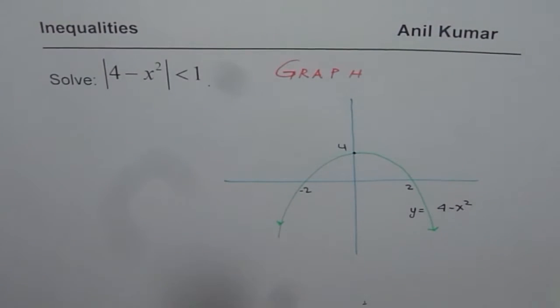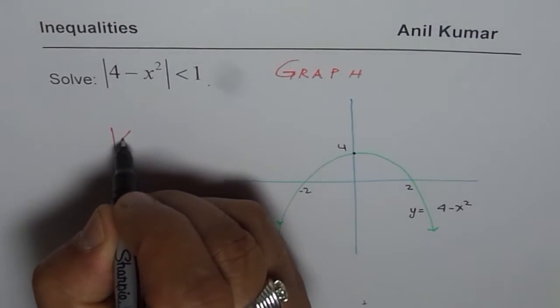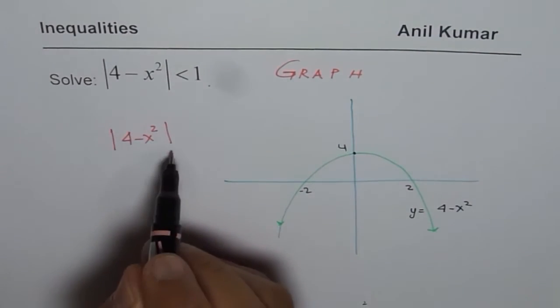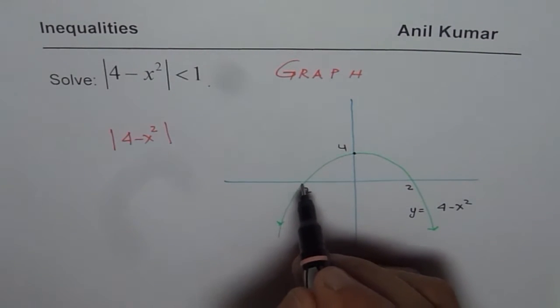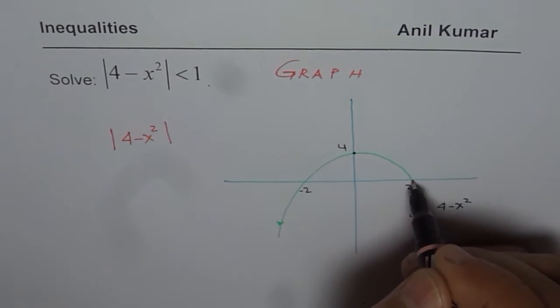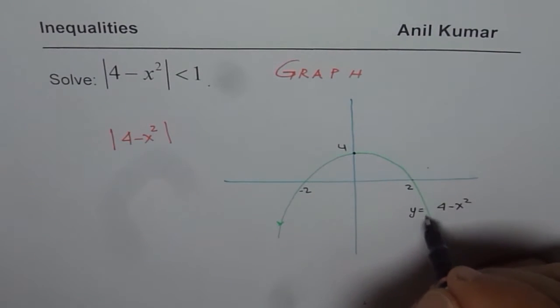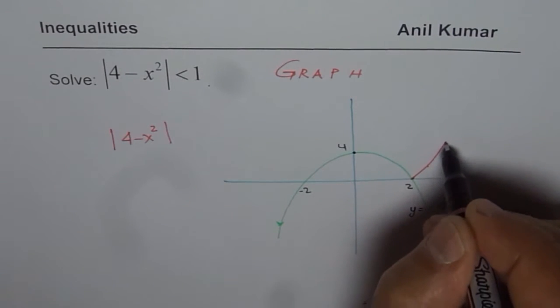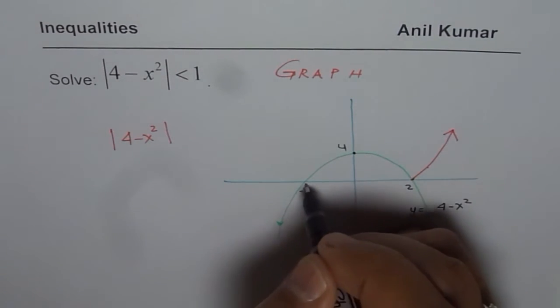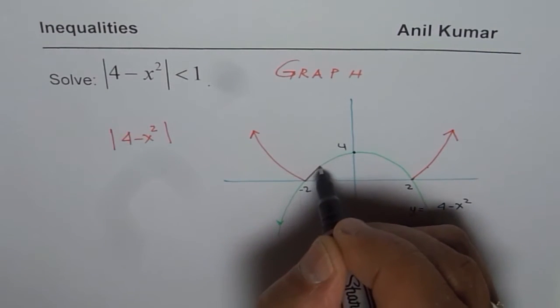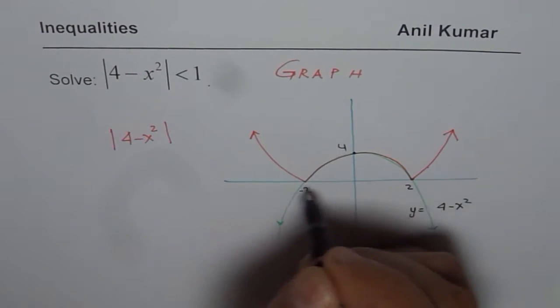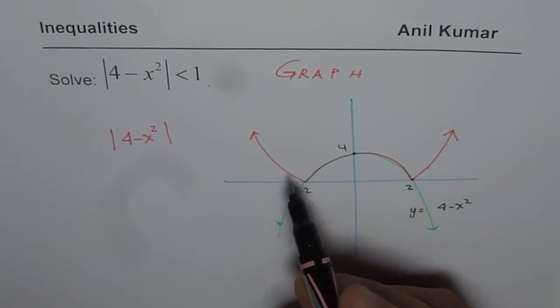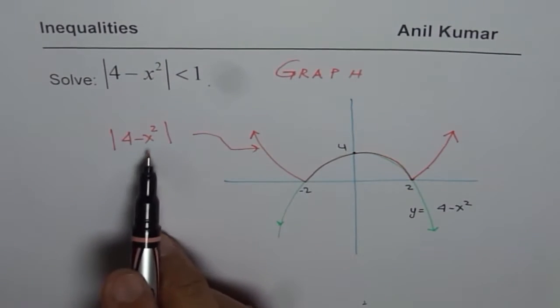Now when you do absolute function, then what really happens? Whenever you do absolute function, that means now let us sketch absolute 4 minus x squared. Absolute means always positive. Now this part is positive, that is fine, but this part actually reflects on the x axis. So it would be instead of going like this down it would be kind of like this up. So it gets reflected. So this becomes your parabola center part and the other part is reflection of initial parabola.